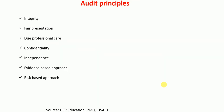What are the different audit principles? The audit principles are: integrity, fair representation, due professional care, confidentiality, independence, evidence-based approach, and risk-based approach. So there are seven audit principles in total.